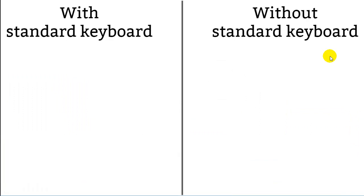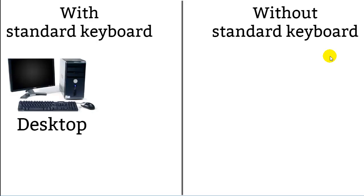There are certain computers that have a standard keyboard, and there are certain computers that do not. An example of a computer that has a standard keyboard is a desktop computer. That's the kind of computer we have at our school — a full standard keyboard with a big box that's the computer, a screen called the monitor, and a mouse. Desktop computers are very popular here at school.